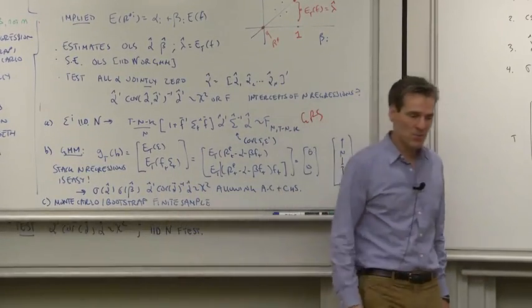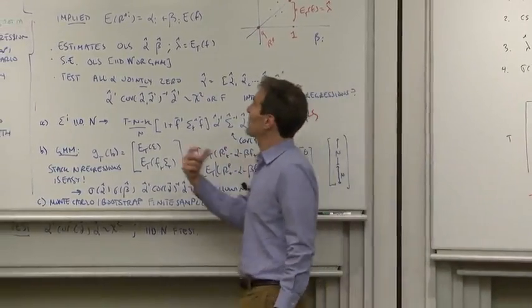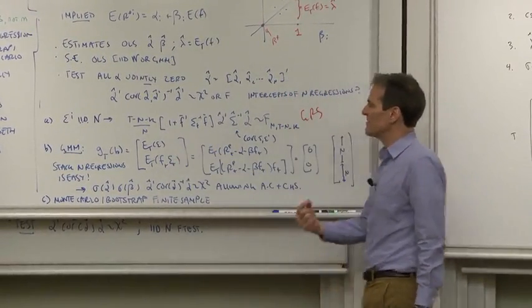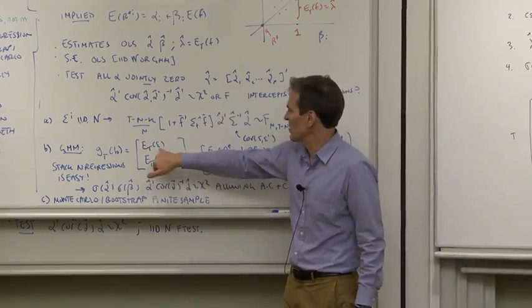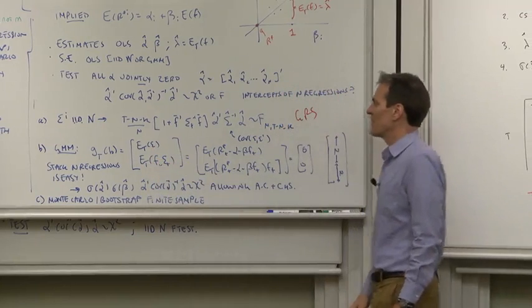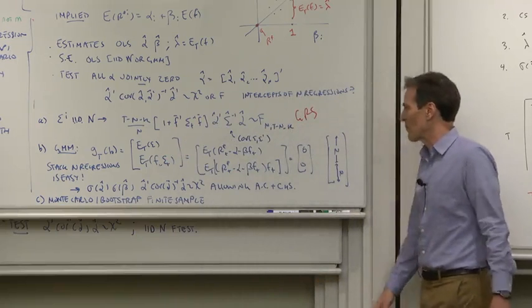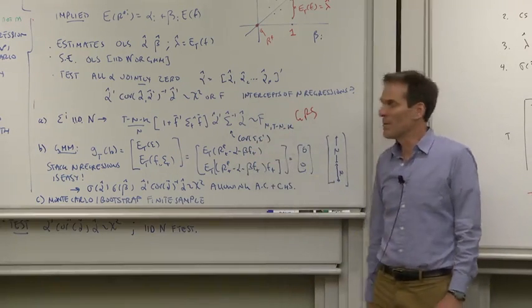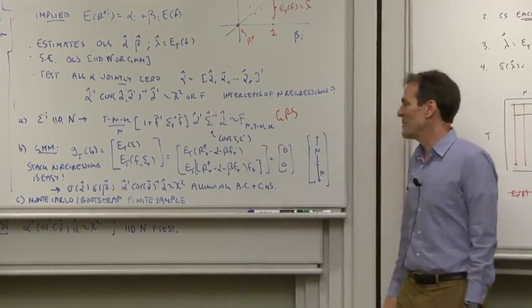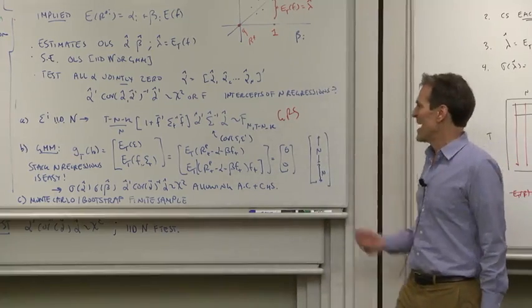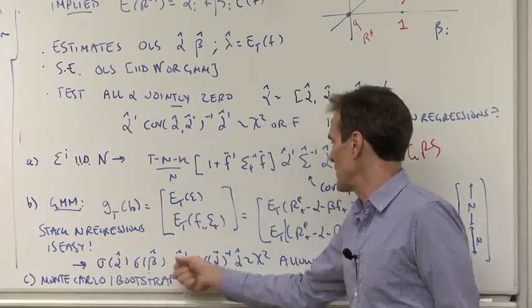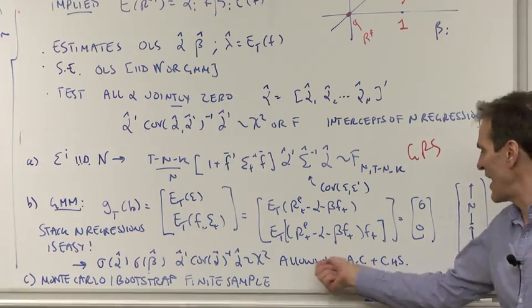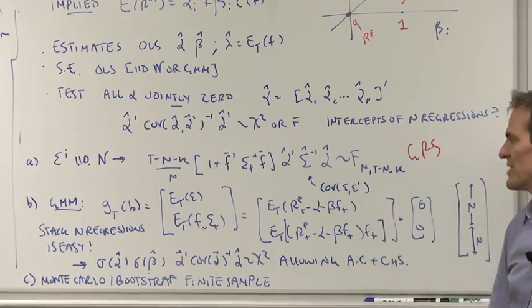This is a problem like many econometric problems, which is very easy if you just stuff it into GMM. Again, the problem is finding the joint distribution of the intercepts of n different regressions. How do you do that? Well, we just stack up the moment conditions that define n different regressions at the same time. Those moment conditions are that the mean of the residuals is zero and the residuals are uncorrelated with the right-hand variables. Now, there's n of those and n of those, but that's no problem. n residuals, n residuals uncorrelated with right-hand variables. So those are just two n moment conditions. It's exactly identified. Throw GMM at it. Again, the formulas are in the notes and the textbooks, so no need to put them on the board. And that gives you what you're looking for. The standard errors of alpha, standard errors of beta, and the covariance matrix of the alpha, which you can use to form a chi-squared matrix test, now allowing for autocorrelation, conditional heteroscedasticity, all the things that the standard formula doesn't.